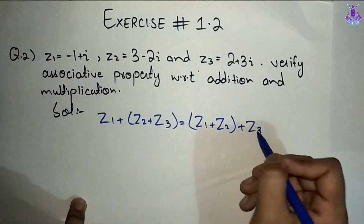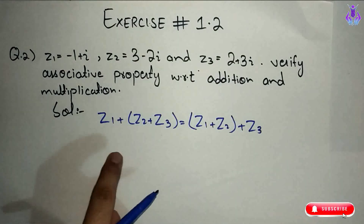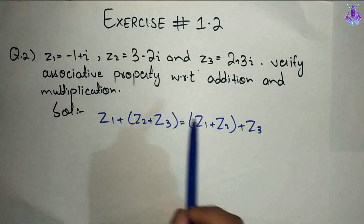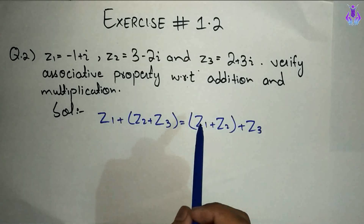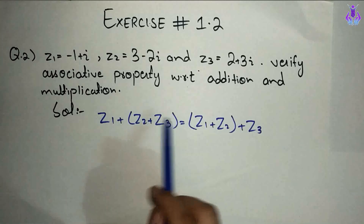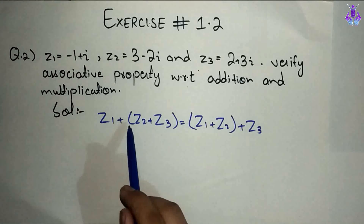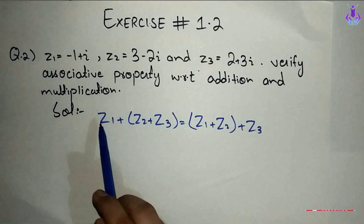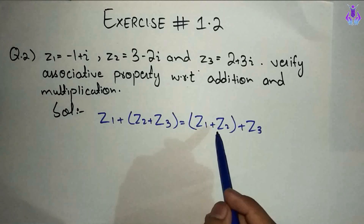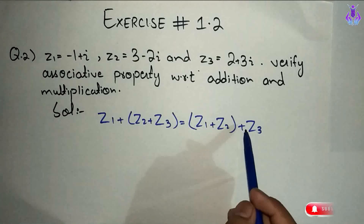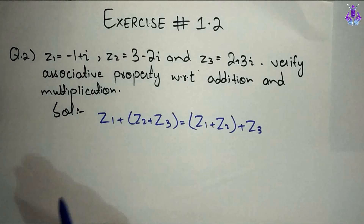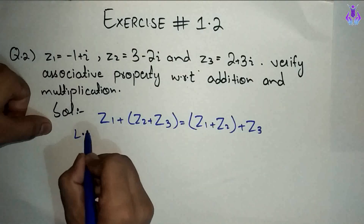Matlab ke z1 plus z2 plus z3 ko hum log kisi bhi tarah se add karein to hamare paas answer same aayega. LHS mein hum logon ne z2 plus z3 ko pehle add karna hai — bracket wali term ko pehle solve karna hai — phir uska result z1 ke saath add kar dena. RHS mein pehle z1 plus z2 solve karenge, uske baad us result ko z3 ke saath add kar denge. Ab hum log start karte hain left hand side.